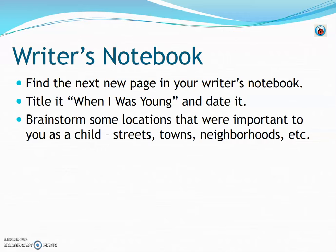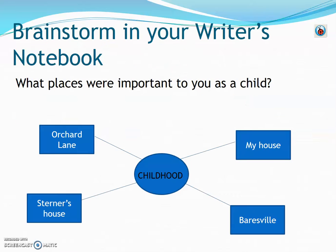In your writer's notebook, find the next new page, put the title When I Was Young at the top, and date it with today's date. Then underneath that, brainstorm some locations that were important to you as a child — it could be a street, a town, a neighborhood, or a destination you spent a lot of time in. Here's my example: I spent a lot of time at my parents' house, at Bearsville where I went to elementary school, at my grandparents' on Orchard Lane where I spent most of my summers, and at my best friend Erica's house. Those four places had good, bad, happy, and sad memories, so I put them on my brainstorm chart.